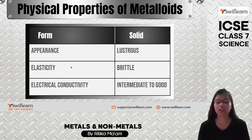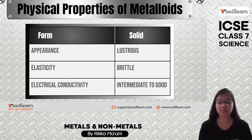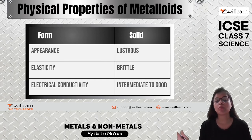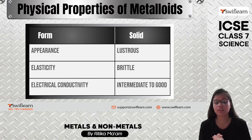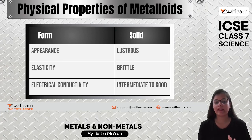Let's look at some physical properties of metalloids. In terms of appearance, they have a shiny surface, similar to metals. Regarding elasticity, they are brittle — they can break easily, which is a property of non-metals. Their electrical conductivity is intermediate to good — not very bad and not very good; it lies in the middle.